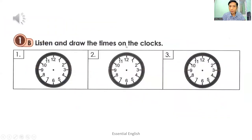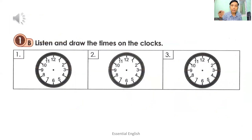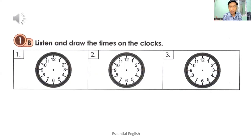Exercise 1B: Listen and draw the times on the clocks. You have to listen to the recording and then draw the times on the clocks. You have to draw an hour hand and a minute hand. Let's listen.